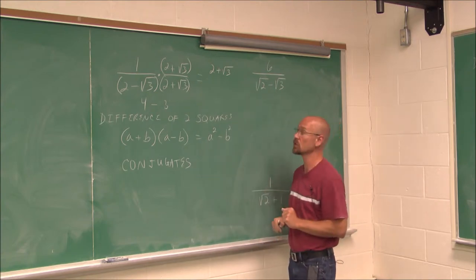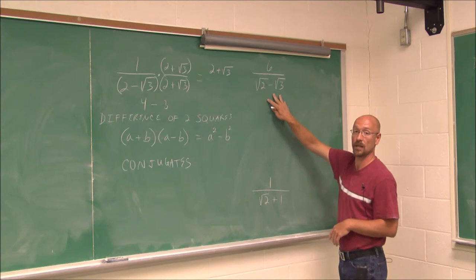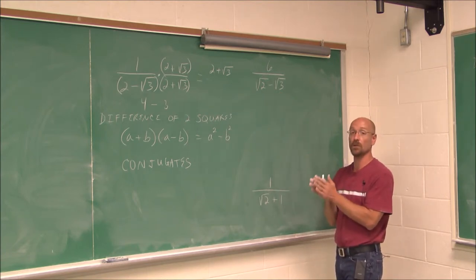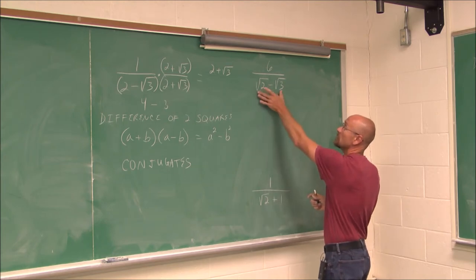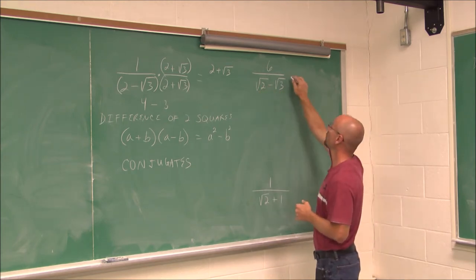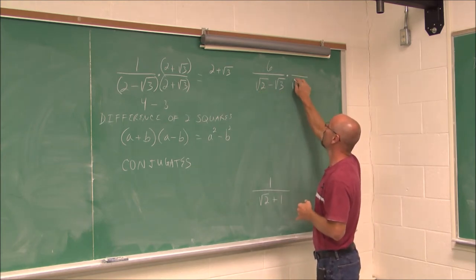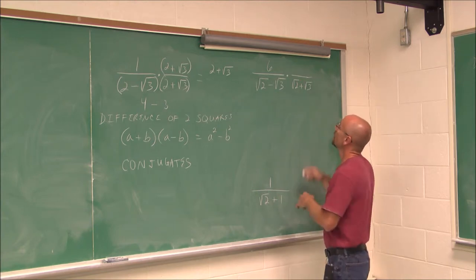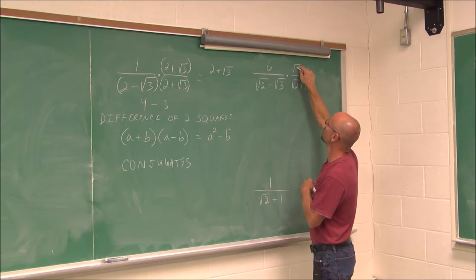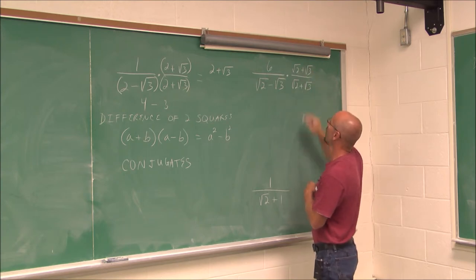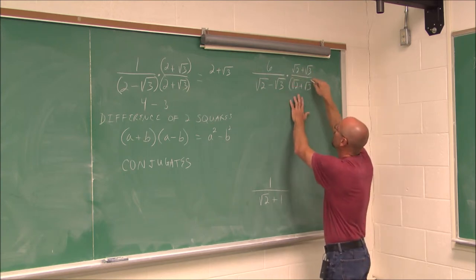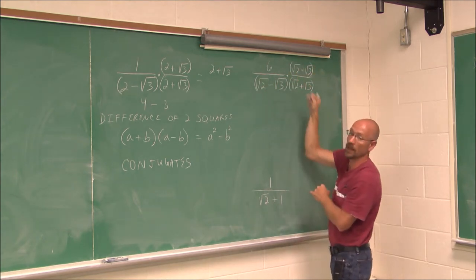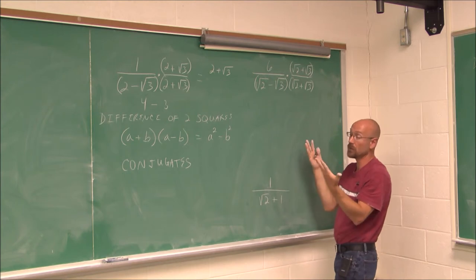That's called using the conjugate. Let's look at another example — this one has two square roots in it. Using the conjugate will still work. We have the difference of these terms, so we can multiply by the sum of those terms — its conjugate. What I do to the bottom I have to do to the top. On the bottom I'm going to have to FOIL; on the top I only have to distribute.